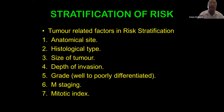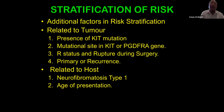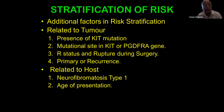Tumor-related factors and risk stratification include: anatomic site, histologic type, tumor size, depth of invasion, grade, M staging, and mitotic index. Next-generation stratification under development includes molecular biology factors: presence of KIT mutation, mutation site (KIT vs PDGFRA), metastasis, rupture during surgery, primary versus recurrent tumor, and host factors such as neurofibromatosis type 1 and age of presentation.